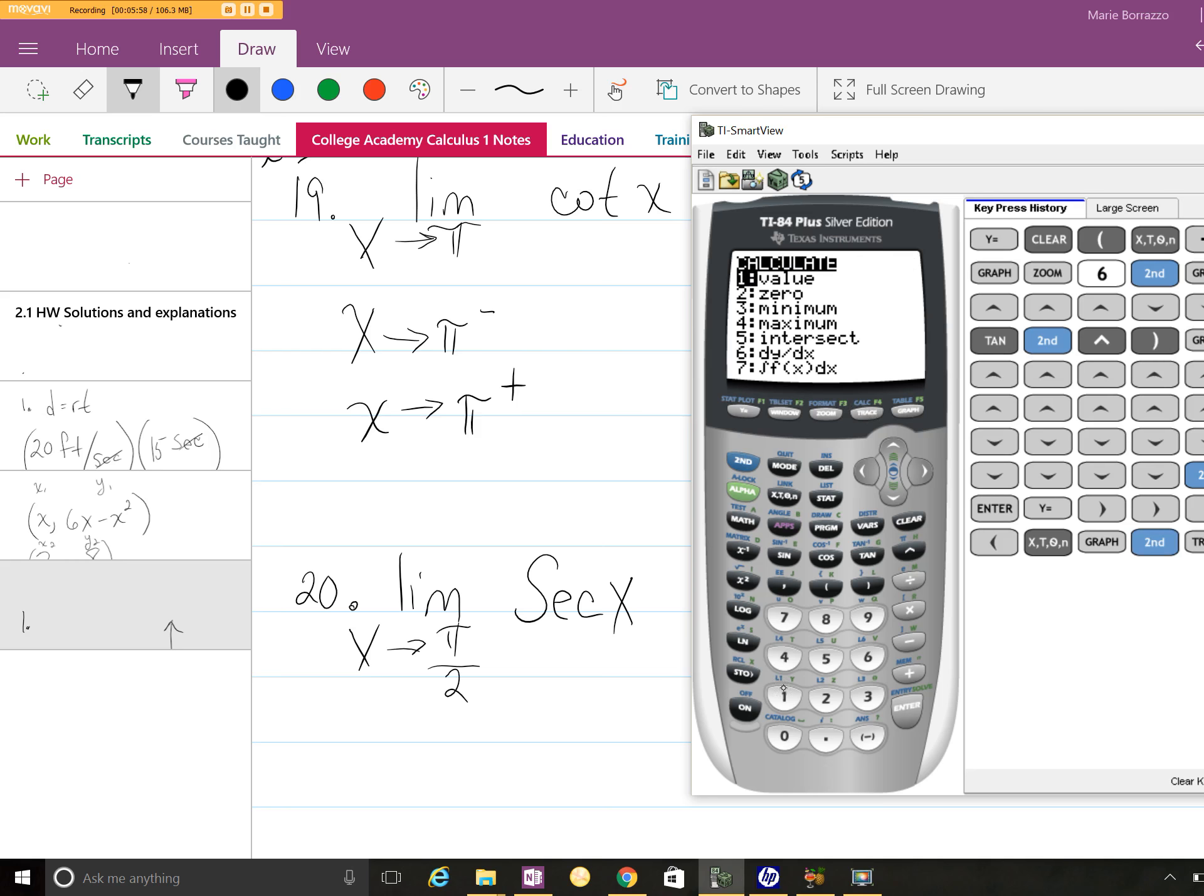So changing it to x will actually give you the graph. So second trace, go back to value. Let's go ahead and put in second π. And again, what do you notice? You get nothing.